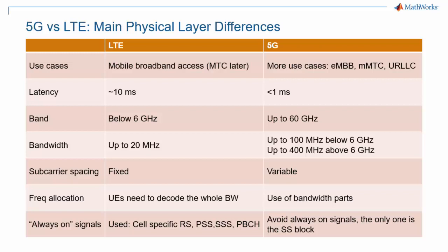Carrier frequencies for 5G can be as high as 60 or 70 GHz, where LTE is only deployed below 6 GHz. This has significant consequences on the design of the physical layer, as beamforming becomes required to support those higher frequencies. At those higher frequencies, more spectrum is available, and 5G NR is set to take advantage of it with up to 400 MHz of bandwidth, and possibly more later.